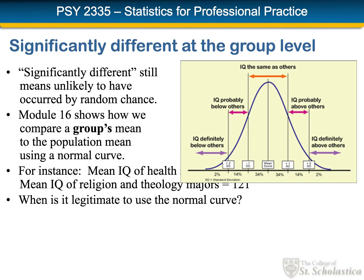Module 16 will take up the same question at a group level — asking whether the IQ of a group of people is significantly different than what we'd expect from the general population. We will learn how to compare a group's mean to the population mean using a normal curve. For instance, the mean IQ of health majors is about 111 and the mean IQ of religion and theology majors is 121. But we must ask: is it legitimate to use the normal curve? Do we have reason to believe that group means are normally distributed?